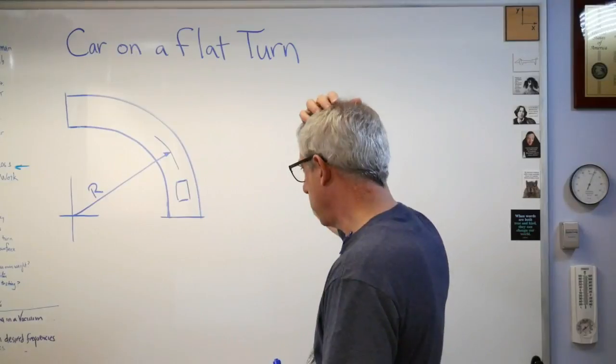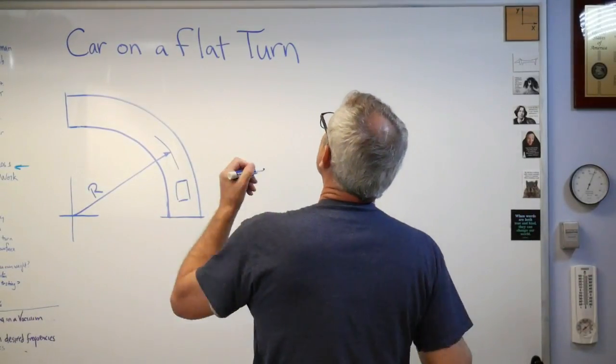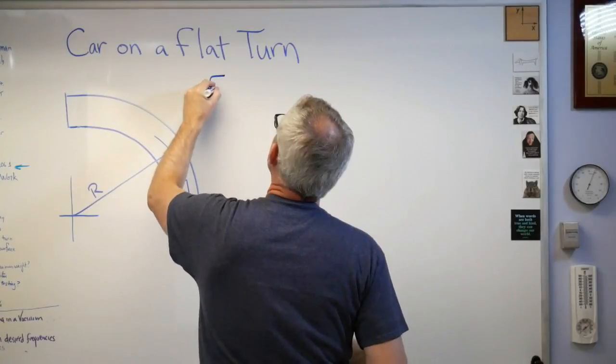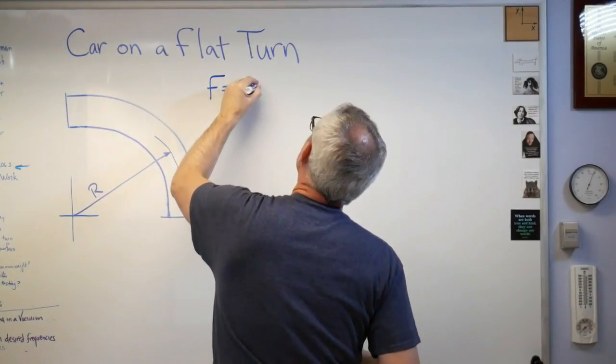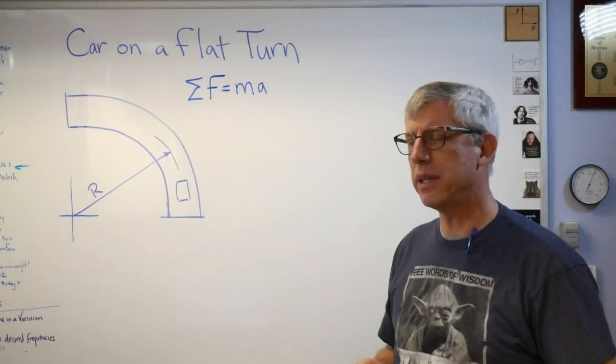If you want to figure out how fast a car is going around a turn, let's start with Newton's law. So the force, or really the sum of the forces equals ma. That's Newton's law.